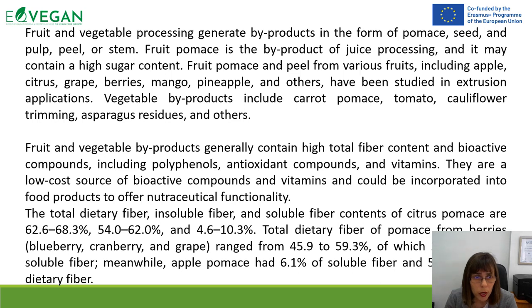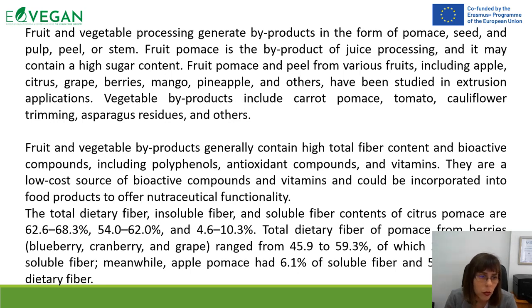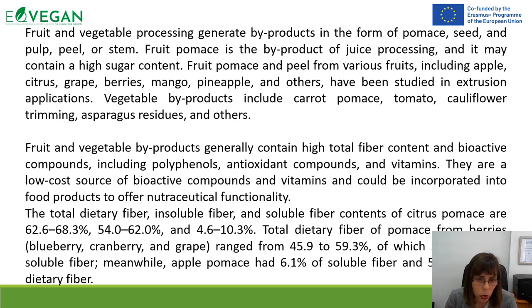Fruit and vegetable processing generates byproducts in the form of pomace, seeds, pulp, peel, or stems. Fruit pomace is the byproduct of juice processing and may contain a high sugar content. Fruit pomace and peel from various fruits — including apple, citrus, and grape — have been studied in extrusion applications. Vegetable byproducts include carrot pomace, tomato pomace, cauliflower, and others, which can be reduced and reused in developing different kinds of products. These byproducts generally contain high total fiber content and bioactive compounds including polyphenols, antioxidant compounds, and vitamins — they are a low-cost source of bioactive compounds that could be incorporated into food products to offer nutraceutical functionality.